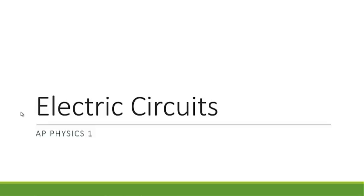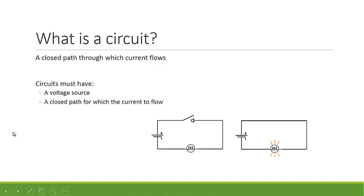Today we're going to discuss electric circuits. A circuit is a closed path through which electric current flows. Circuits must have two main components: a voltage source — such as a battery or plugging something into a wall outlet — and a closed path through which the current can flow. There cannot be any gaps in the path.